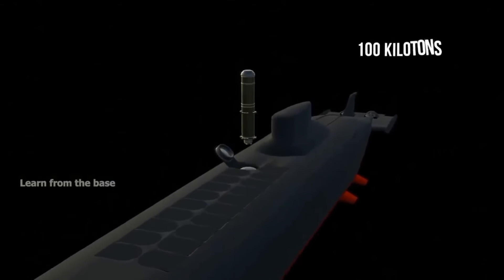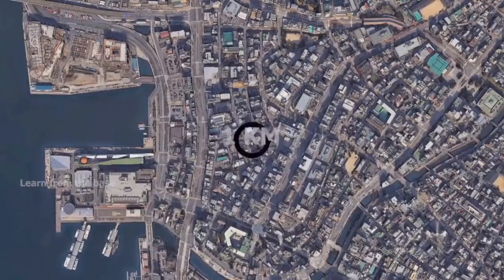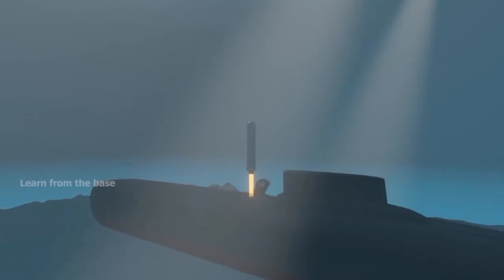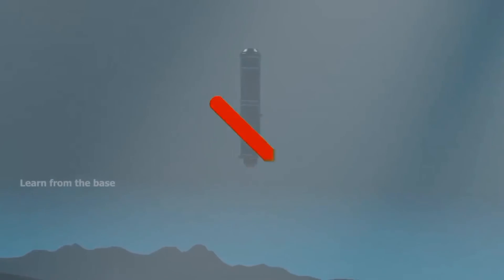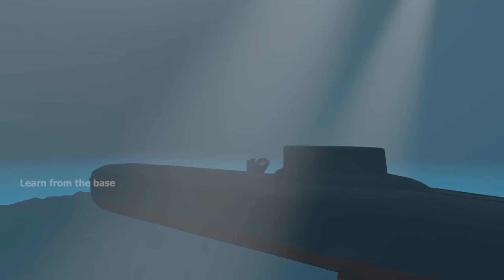The submarine is capable of firing ballistic missiles from underwater, but the rocket engine needs air to burn so they won't work underwater. So how do they launch missiles from underwater?